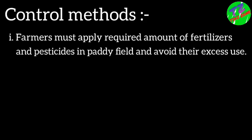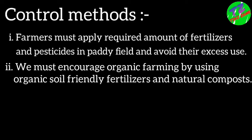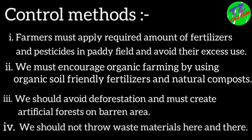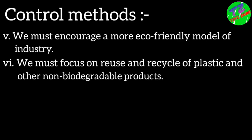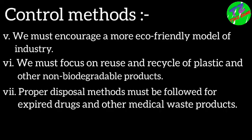To control soil pollution, farmers must apply only the required amounts of fertilizers and pesticides. We must encourage organic farming by using organic, soil-friendly fertilizers and natural compost. We should avoid deforestation and create artificial forests on barren areas. We should not throw waste materials carelessly, and must encourage eco-friendly industrial models. We must focus on reusing and recycling plastic and other non-biodegradable products, and proper disposal methods must be followed for expired drugs and other medical waste.